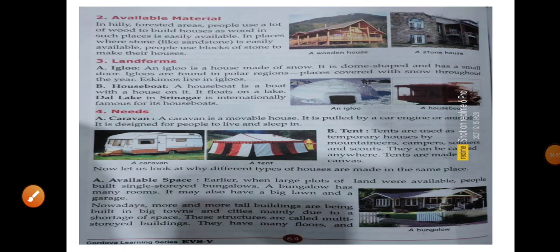Now let's look at why different types of houses are made in the same place. Ab hum dekhenge — abhi tak humne dekha ki kis tarah se alag ghar bante hain alag jagahon pe — now we will see ki alag tarah ke ghar kyun bante hain ek same jagah mein. Like available space — pehle pehle kyunki zameen zyada thi, space zyada tha, toh log ek hi manzil ya ek hi maale ka ghar banate the. Now a bungalow has many rooms, and it may also have a big lawn and a garage.